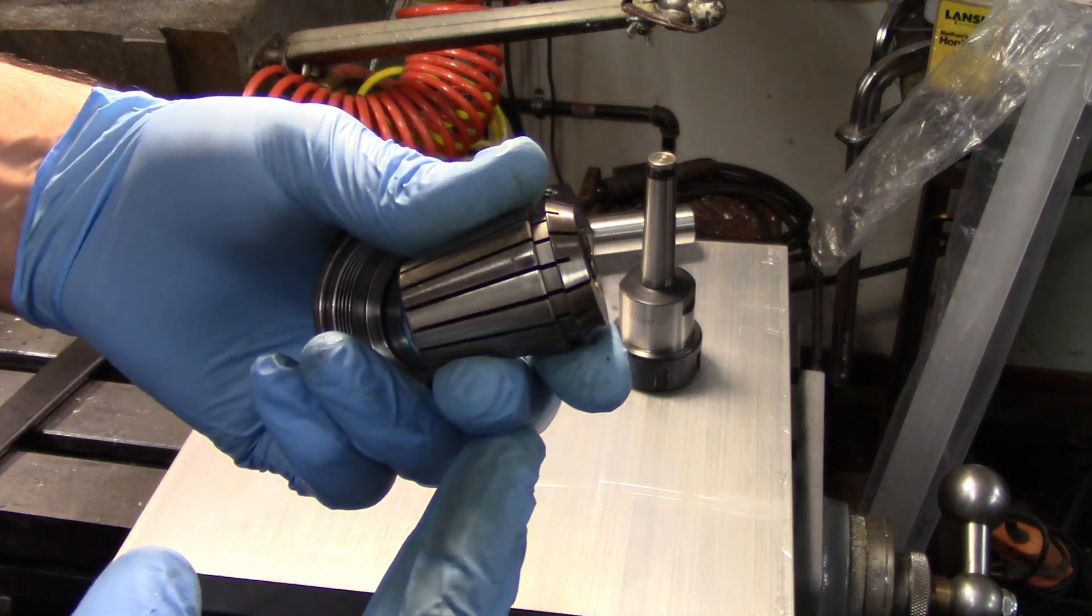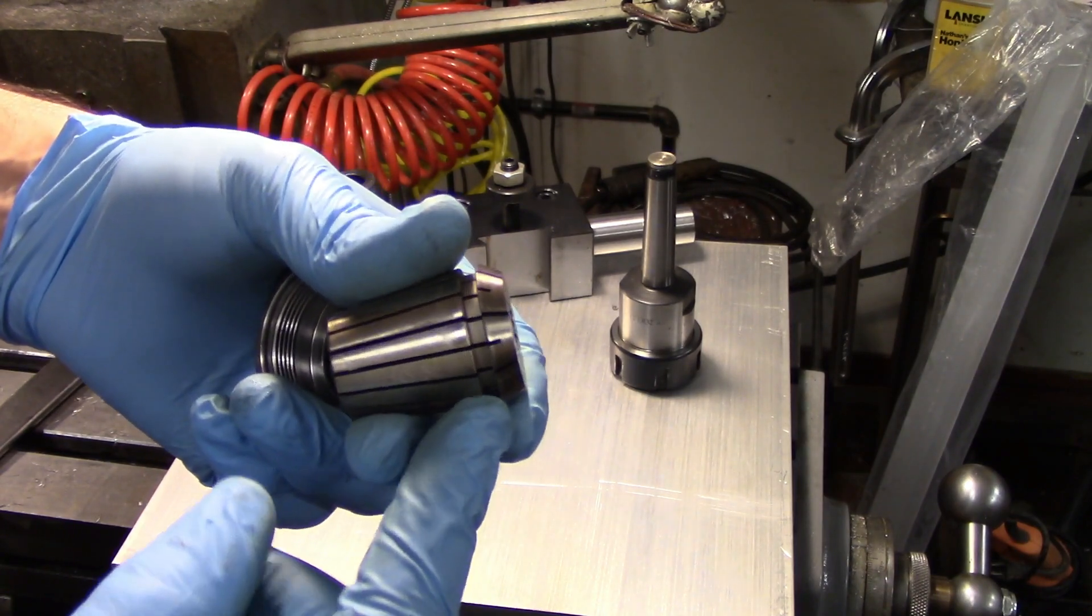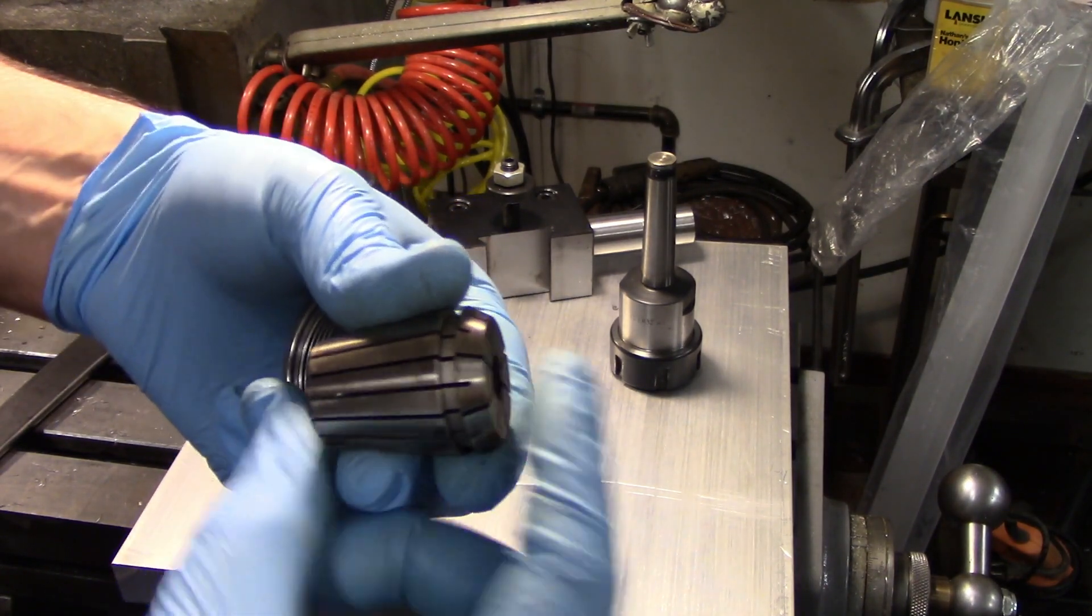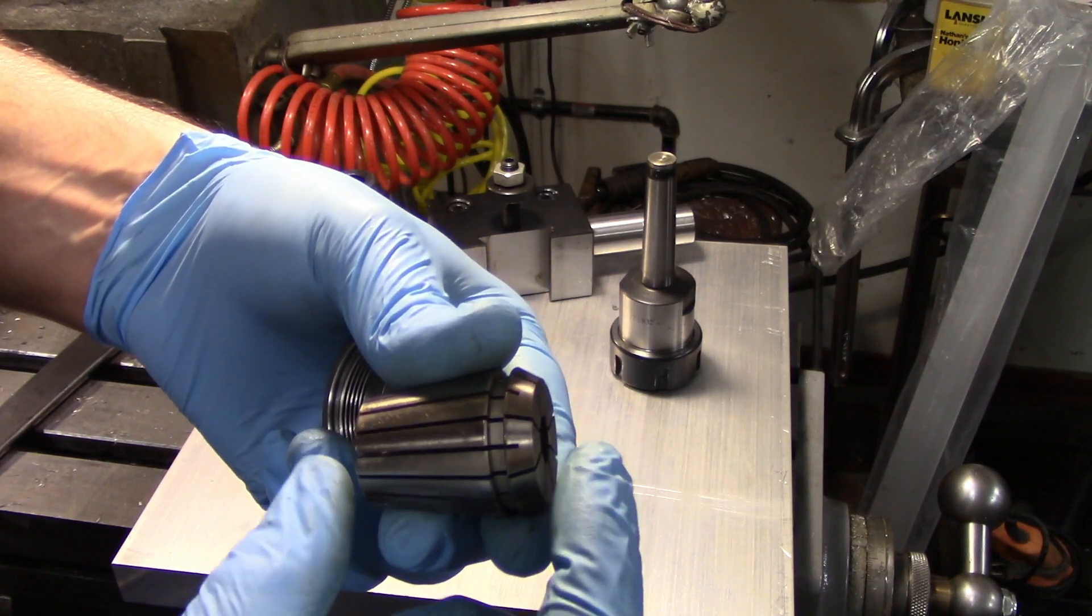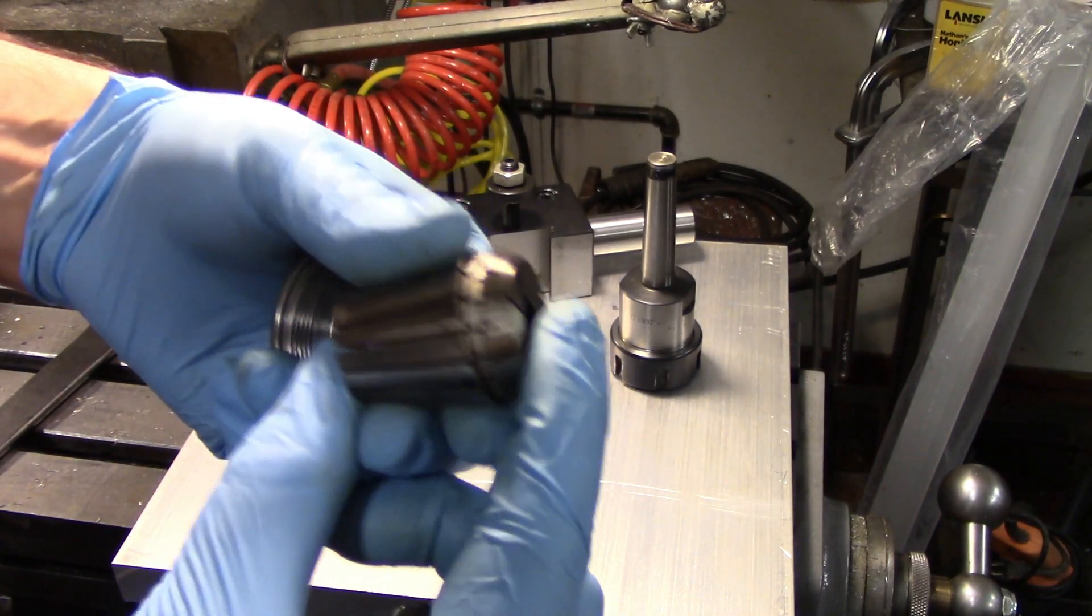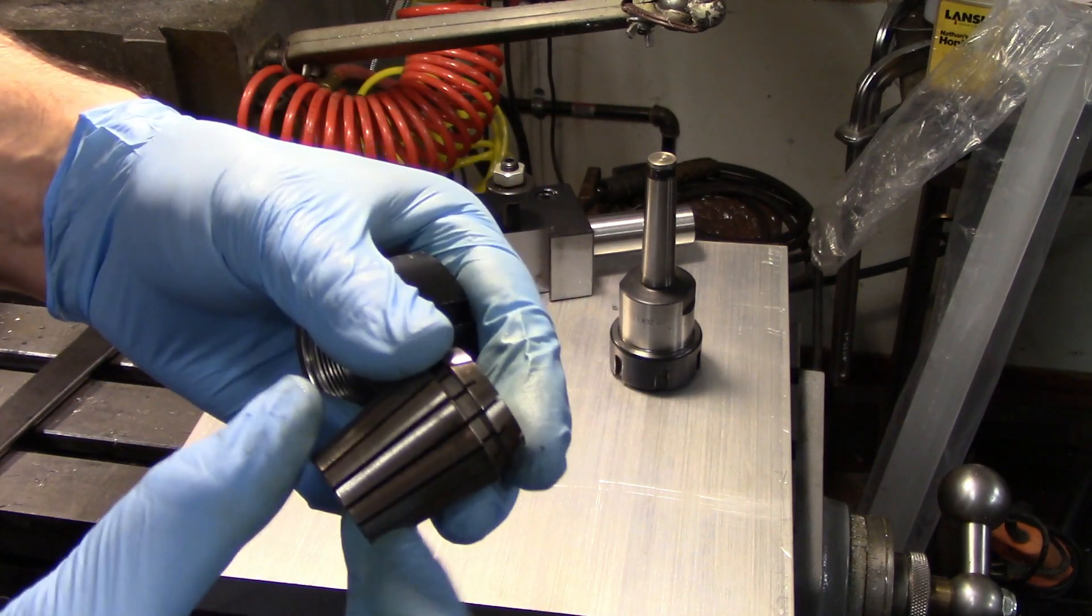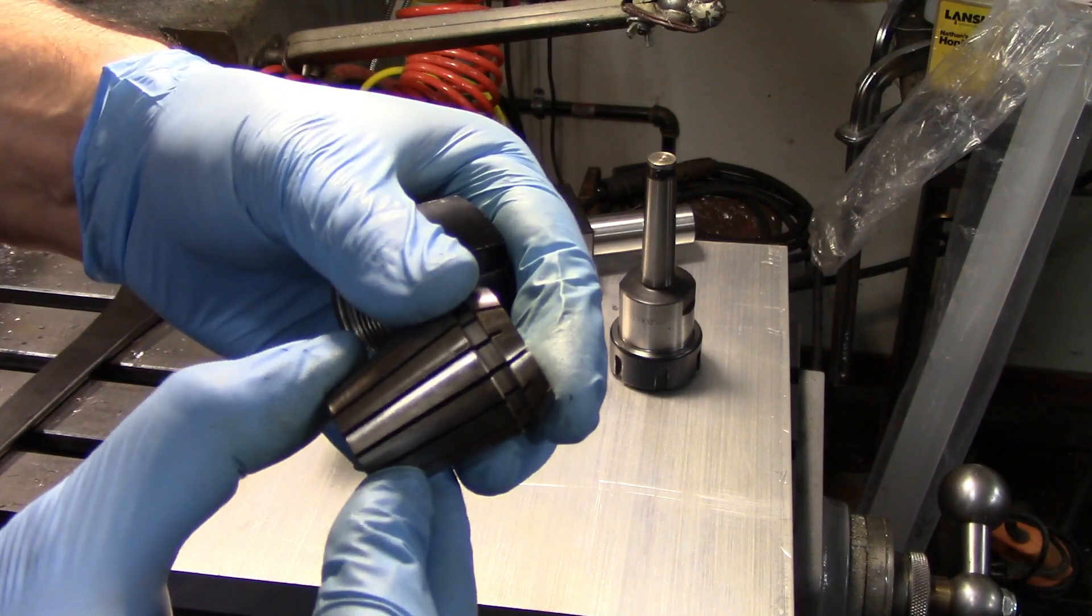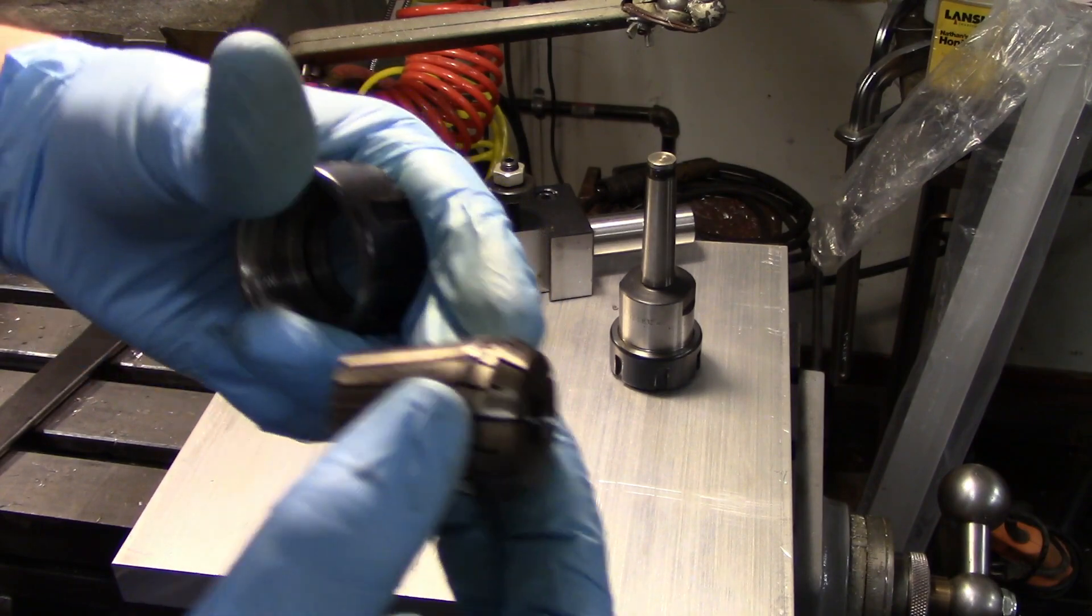Now like any collet system there is a weakness. ER collet chucks are not very good at holding short objects. You really want to have something going all the way through the collet or at least most of the way through the collet in order for it to hold rigidly. With a really short object, it'll squeeze down more at that free end and you're not actually holding very securely at the spot where you should be.